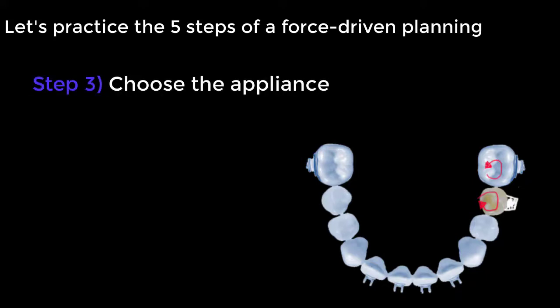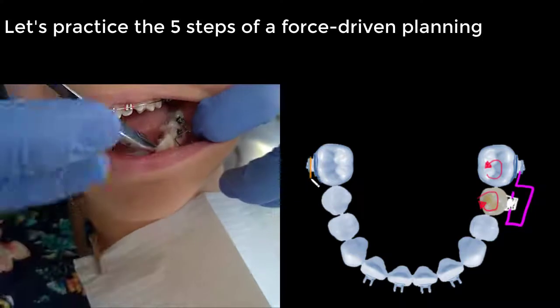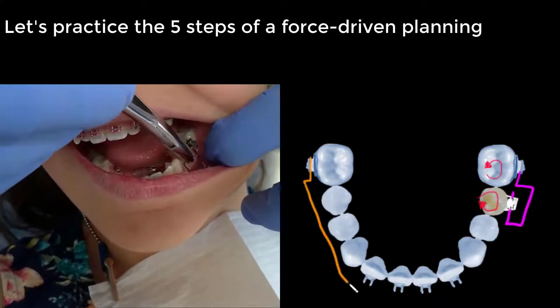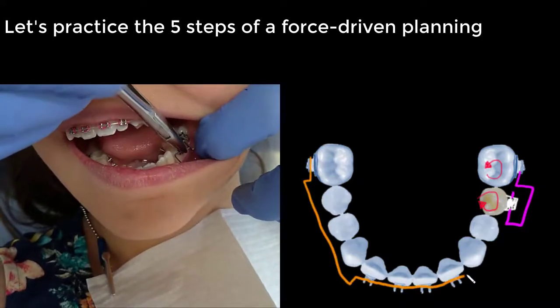In step three, we will choose the appliance, which will be a rectangular loop for the active unit and an utility arch with two bands for the anchorage or reactive unit.